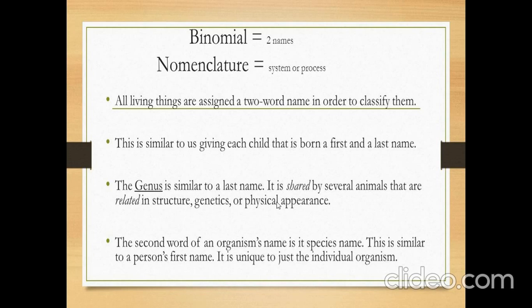The second word of an organism's name is the species name. This is similar to a person's first name, and it is unique to that particular individual organism.